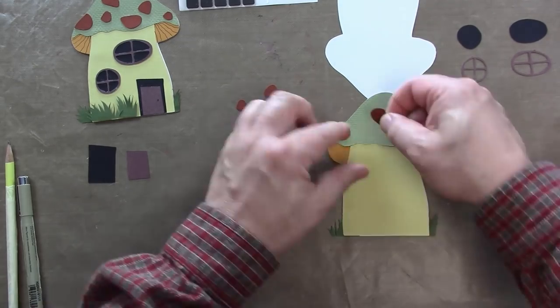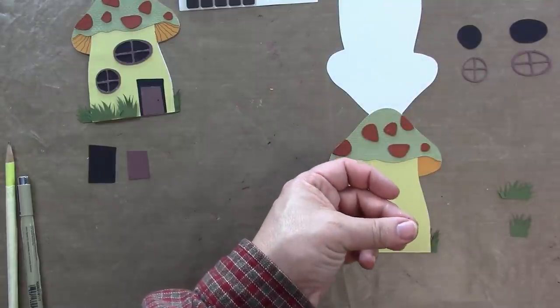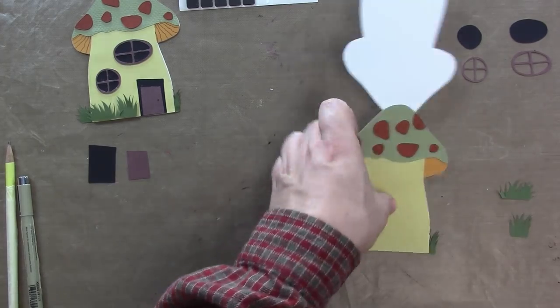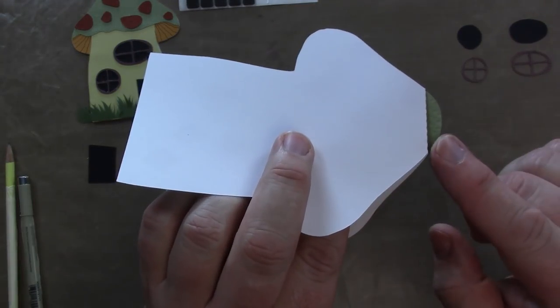I think this would look great if the spots were cut out maybe with glitter paper, something to really make it sparkle. And you can see where the fold is and how we didn't put any adhesive at that top part of the cap.